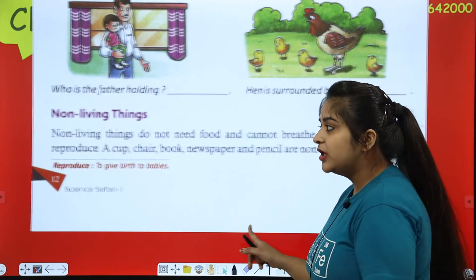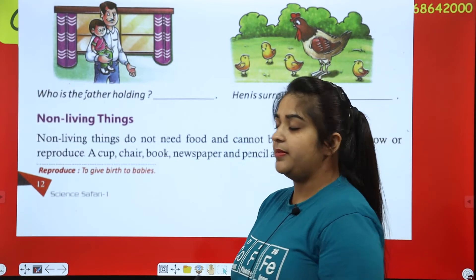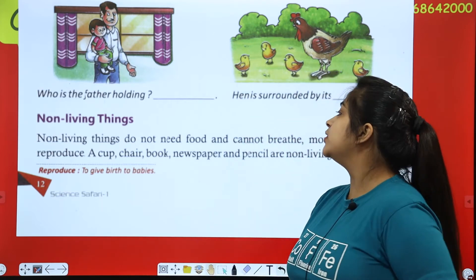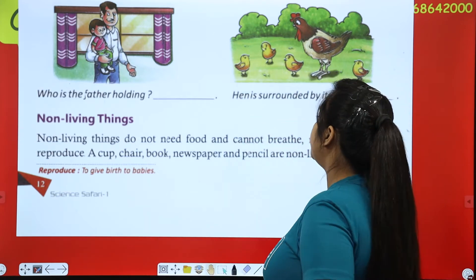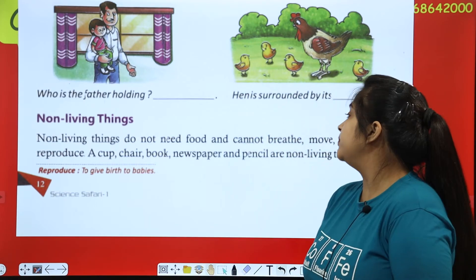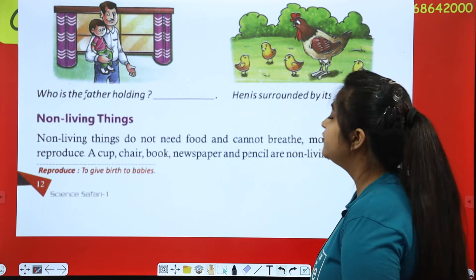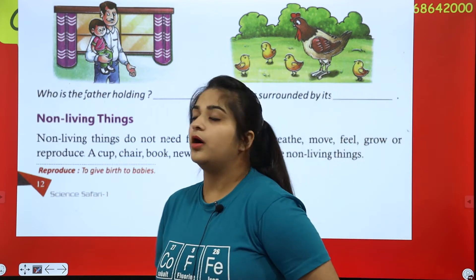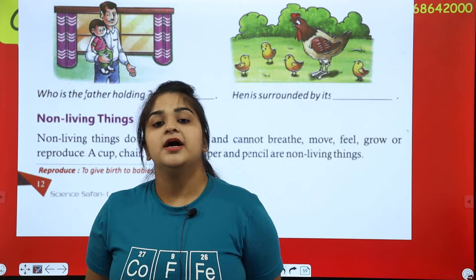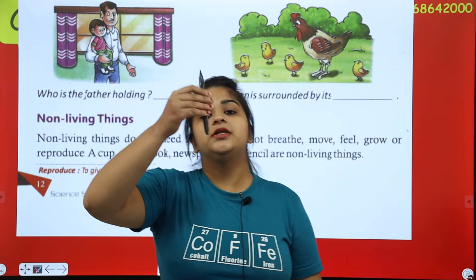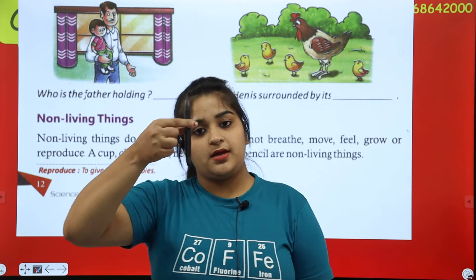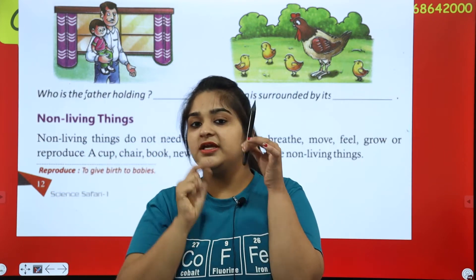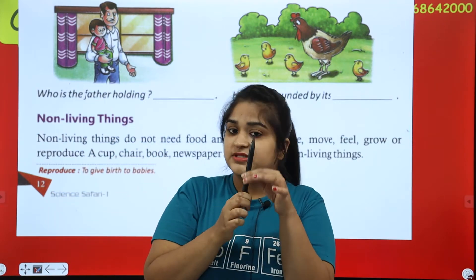Now let's talk about non-living things. Non-living things do not need food and cannot breathe, cannot move, cannot feel, cannot grow or cannot reproduce. This is a non-living thing — it cannot reproduce either, meaning it cannot have babies.